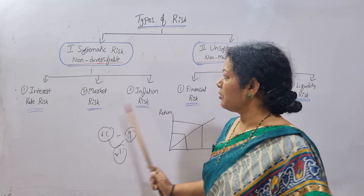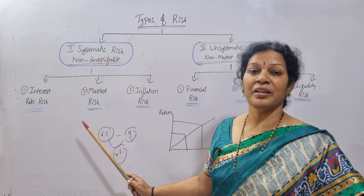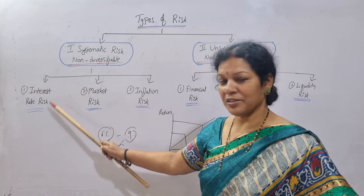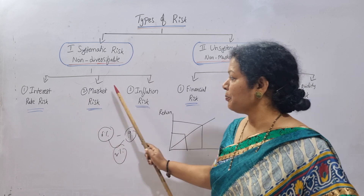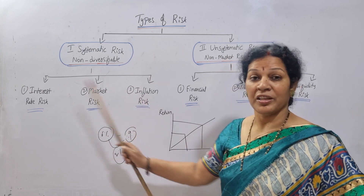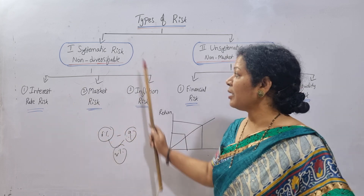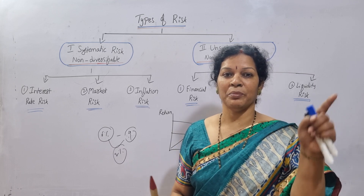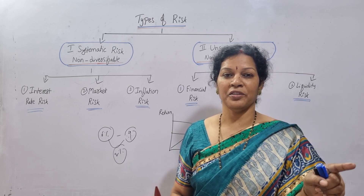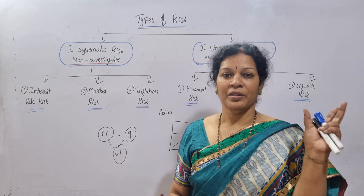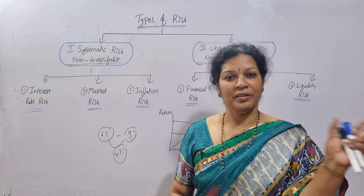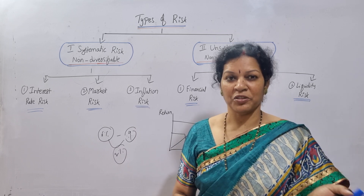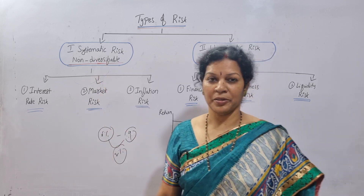So these three — interest rate risk, market risk, and inflation risk — are not in our hands. That is why they come under systematic risk, based on economic, market, political conditions, and whatever the government decides.